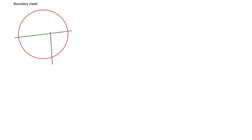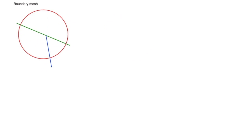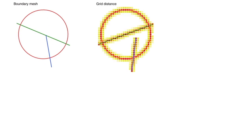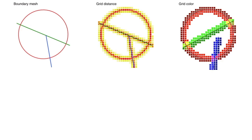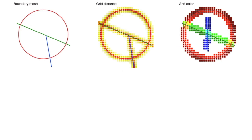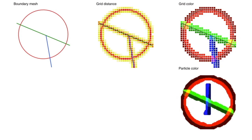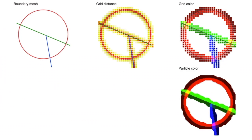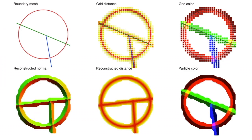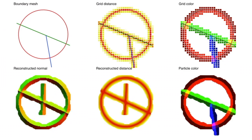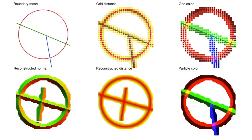Here we visualize the life cycle of CDF. It starts with rigid boundaries and rasterizes to grid efficiently via rigid boundary particles. Note that when boundaries intersect, CDF will still be correctly handled. Particles update their color based on gridded CDF information, and then reconstruct the distance and normal using moving least squares. Note that the reconstruction is robust even when information on some grid nodes is missing.